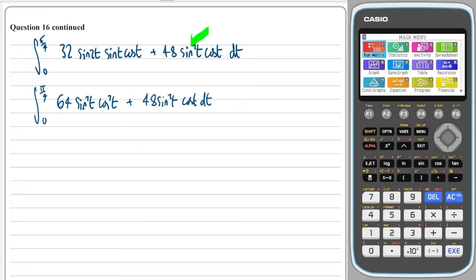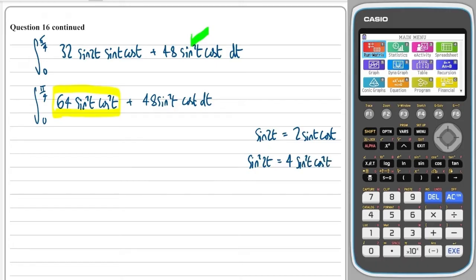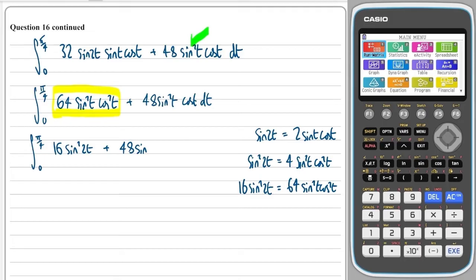This part — 64sin²t·cos²t — looks very much like a sin2t squared term. On the side: sin2t = 2sint·cost. Squaring both sides gives sin²2t = 4sin²t·cos²t. Multiplying both sides by 16 gives 16sin²2t = 64sin²t·cos²t. So we can replace that term with 16sin²2t.